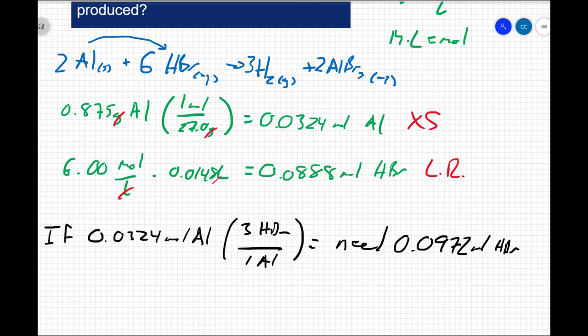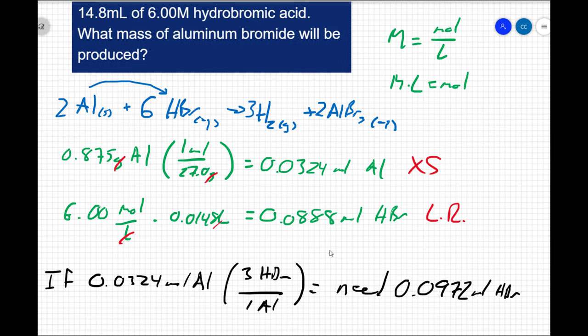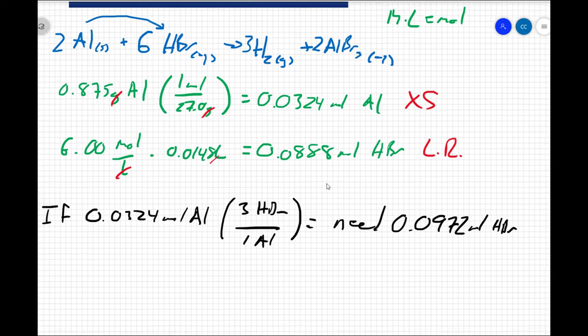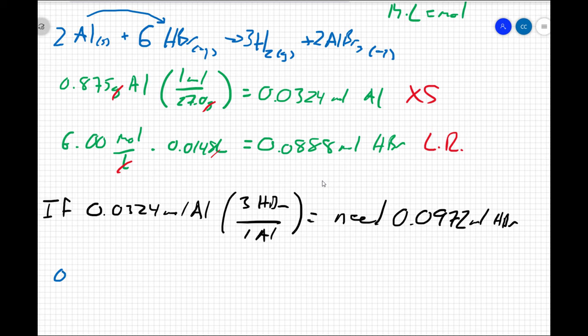Now that we have the limiting reactant, we can then proceed to our final answer here. The question is asking what mass of aluminum bromide will be produced. So I'm going to use my limiting reactant to predict how much product is made. So I have 0.0888 moles of HBr in my limiting reactant. And the ratio between the product I'm looking for in my limiting reactant is 2 to 6, or 1 to 3.